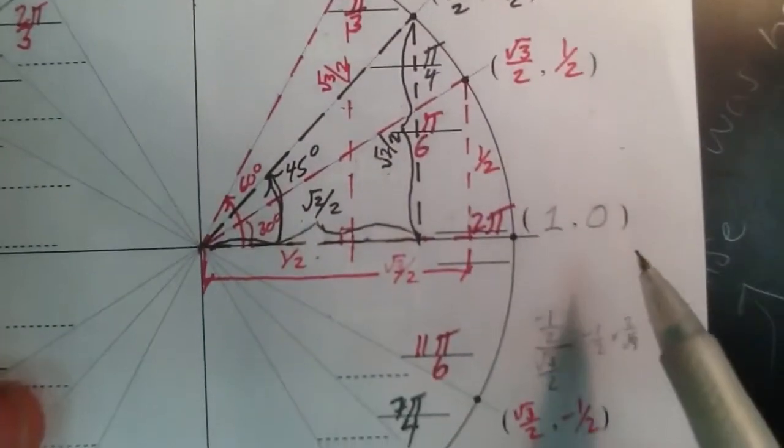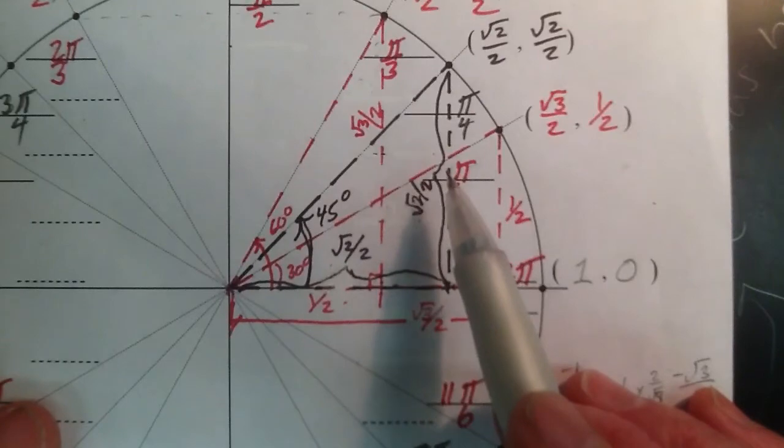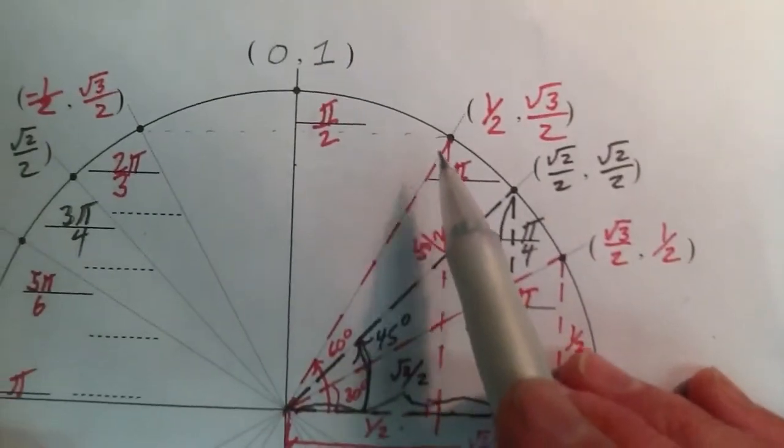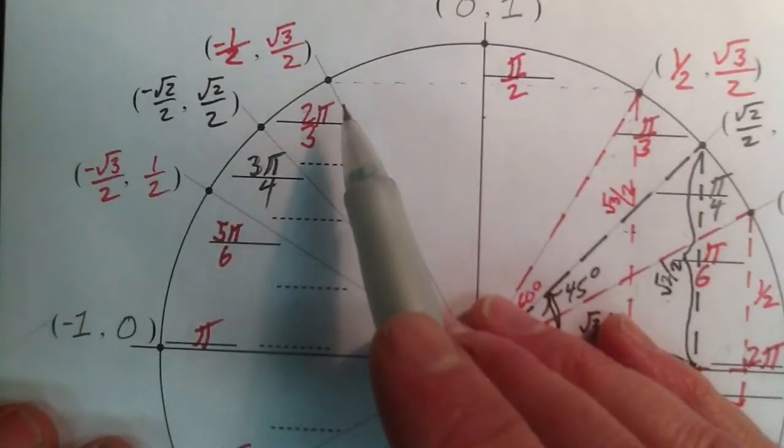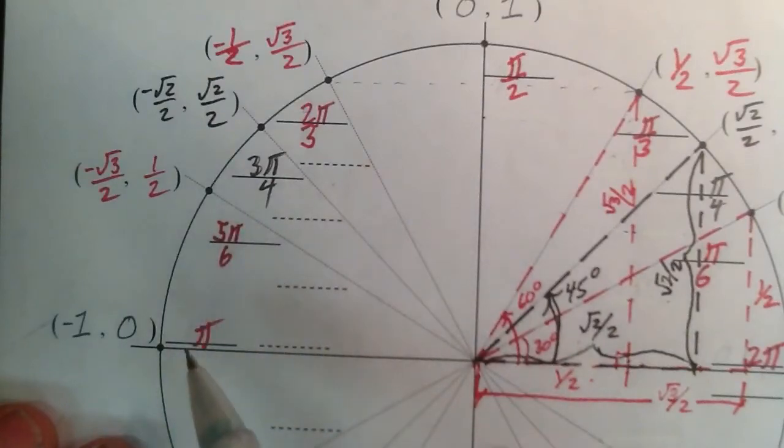What about π over 6? One-sixth, two-sixths, three-sixths, four-sixths, five-sixths, six-sixths.